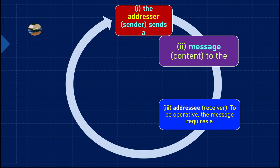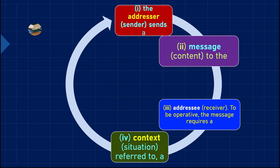The message also requires a context — a situation. Without context, no communication can take place. There must be a reason for any communication to occur. For example, at this moment I am talking to you because my context and reason is that I want to tell you about Roman Jakobson's model of the functions of language — that is the context here.